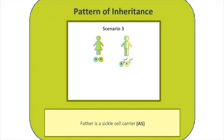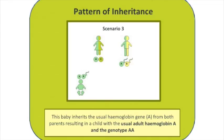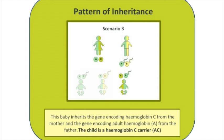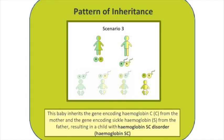So what are the possible combinations for any potential offspring? First, the offspring might inherit healthy haemoglobin A from both mum and dad, giving genotype AA. Second, the offspring might inherit haemoglobin A from the mum but the sickle cell gene from the father — he or she will be a carrier of the sickle cell gene with genotype AS. Third, the child might inherit the C gene from the mother and the healthy A from the dad, making them a carrier of haemoglobin C with genotype AC. Fourth, the offspring may inherit the C and the S from the parents, giving genotype CS — and like sickle cell disease, a child with haemoglobin SC disorder may manifest with some clinical problems.